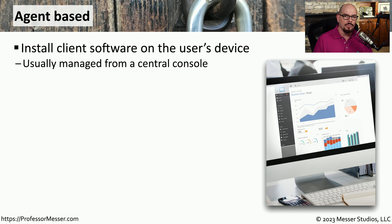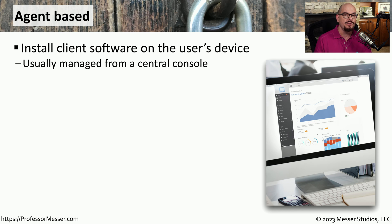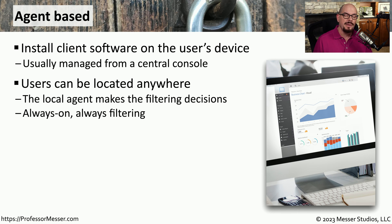A URL filter built into a firewall assumes that the users are going to be in a place where the firewall is managing that traffic. In today's networks, where people are very mobile and many are working from home, you may not have that luxury. Instead, you may want to put the control of those URLs on the client itself. These would be agent-based content filters installed on the user's desktops and other devices. All of these are managed through a central console, but the decision process occurs on the user's device directly. This means we don't have to be behind a particular firewall or located on a particular network to have this filtering work properly.